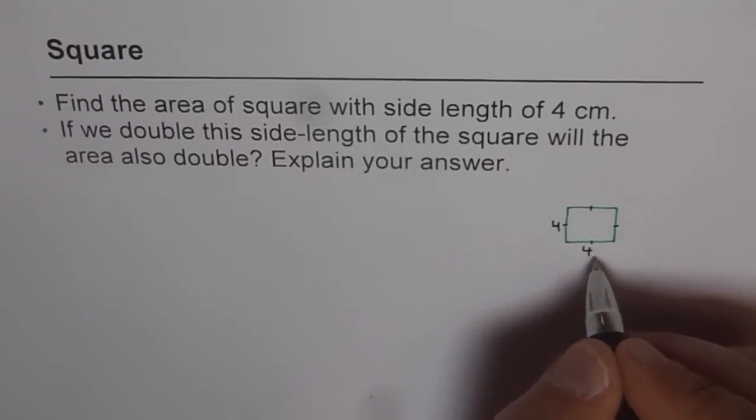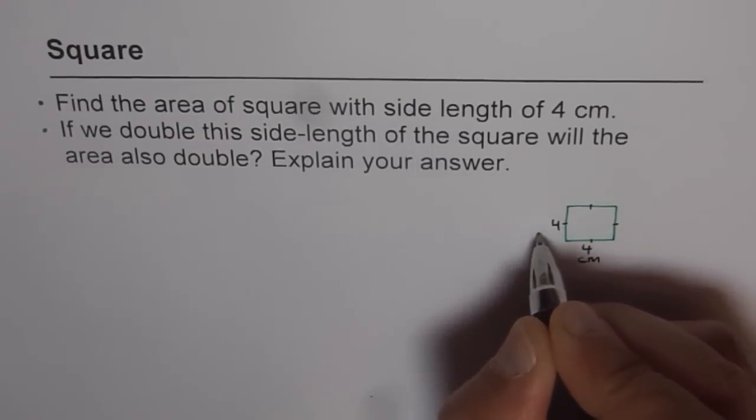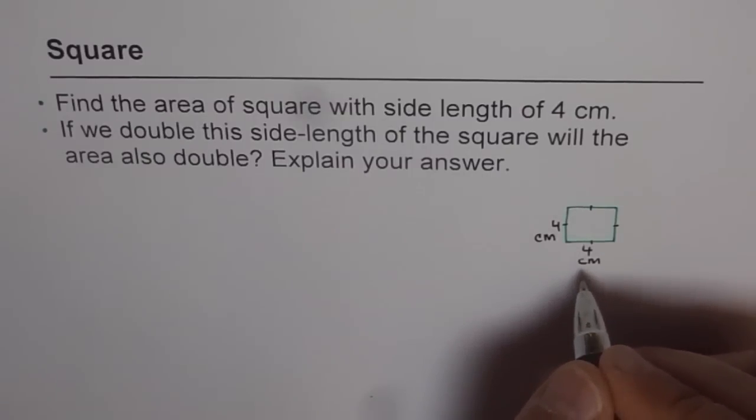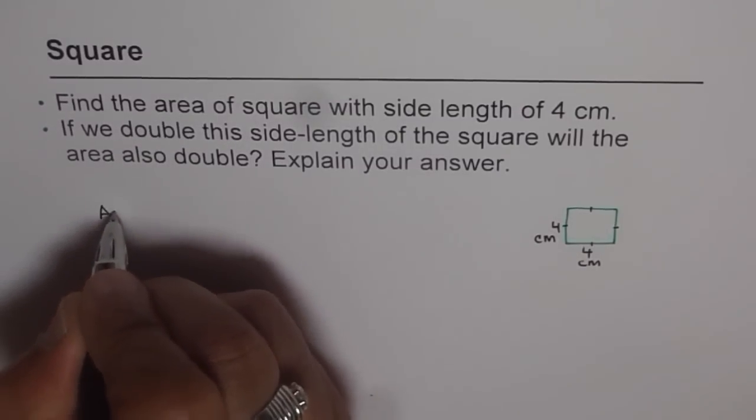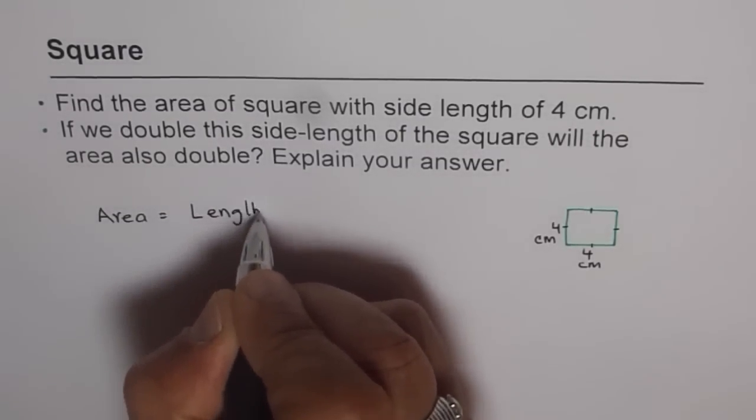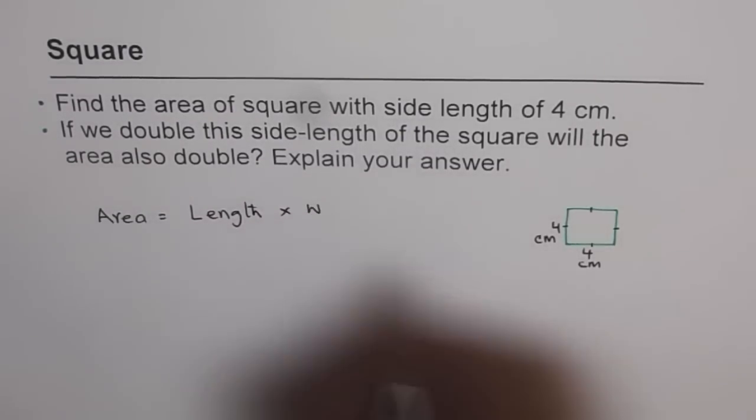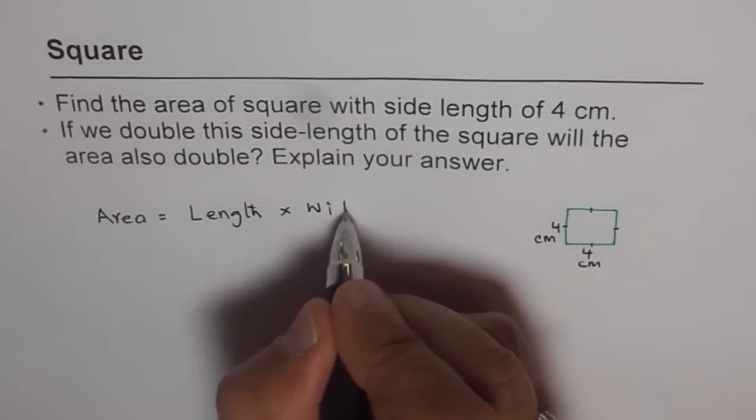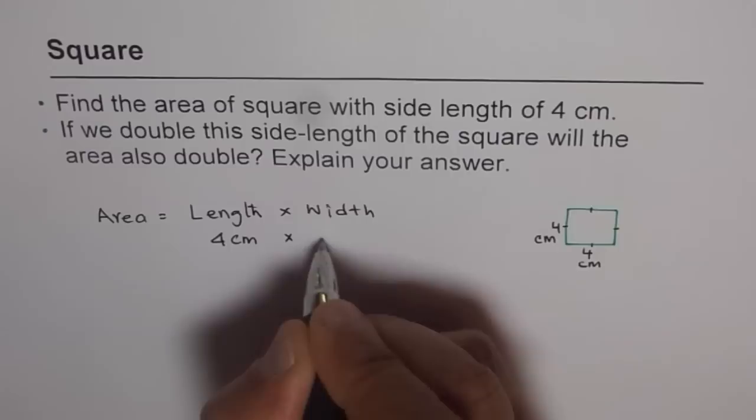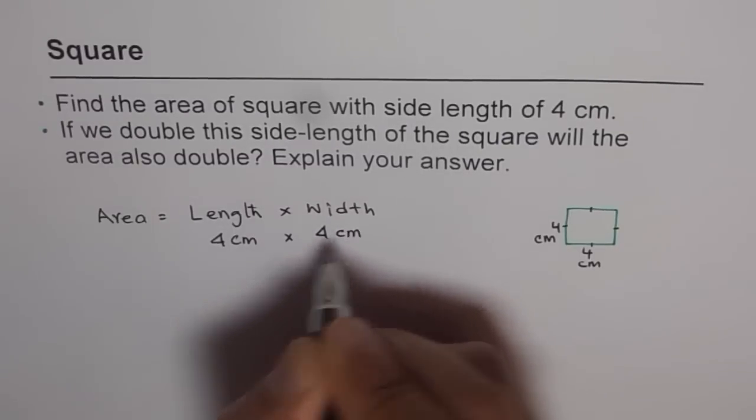Now if my side lengths are 4, what is the area of this square? The side lengths are in centimeters - 4 cm and this is also 4 cm. What do you think is the area? Well, area is equal to length times width. And what is the length and width of this? It is 4 cm by 4 cm. So it's 4 times 4.